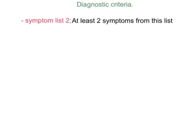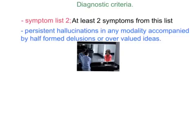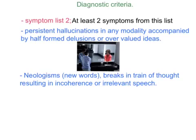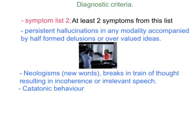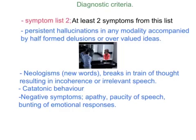Symptom List 2 requires at least two symptoms from this list to be diagnosed. These are: Persistent Hallucinations in any modality, accompanied by half-formed delusions or overvalued ideas; Neologisms — literally meaning new words — which refers to spoken nonsense words; breaks in the train of thought, which both result in incoherence or irrelevant speech; Catatonic behaviour, the debilitating physical effect of schizophrenia, which includes marked motor abnormality, usually rigidity of the limbs, but can include other negative effects as well; and finally, negative symptoms, which are harder to treat, including apathy, paucity of speech, and blunting of emotional responses.